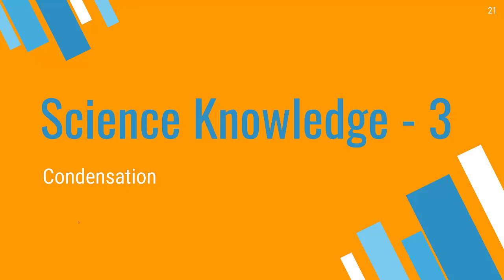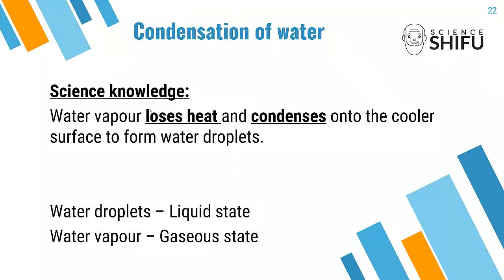The third science knowledge is condensation — the opposite process of evaporation. Water vapor will lose heat and condense onto a cooler surface to form water droplets. Take note of the difference: water vapor is in a gaseous state, while water droplets are in a liquid state. Even clouds in the sky are made of water droplets, so they are in a liquid state.